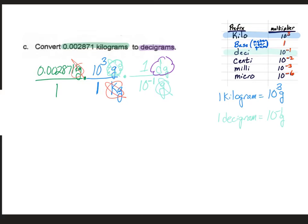Now we put it into our calculator: start with 0.002871, divide by 1, multiply by 10 to the third, divide by 1, multiply by 1, and divide by 10 to the negative 1, which gives us 28.71 decigrams, or in correct scientific notation, 2.871 times 10 to the first decigrams.